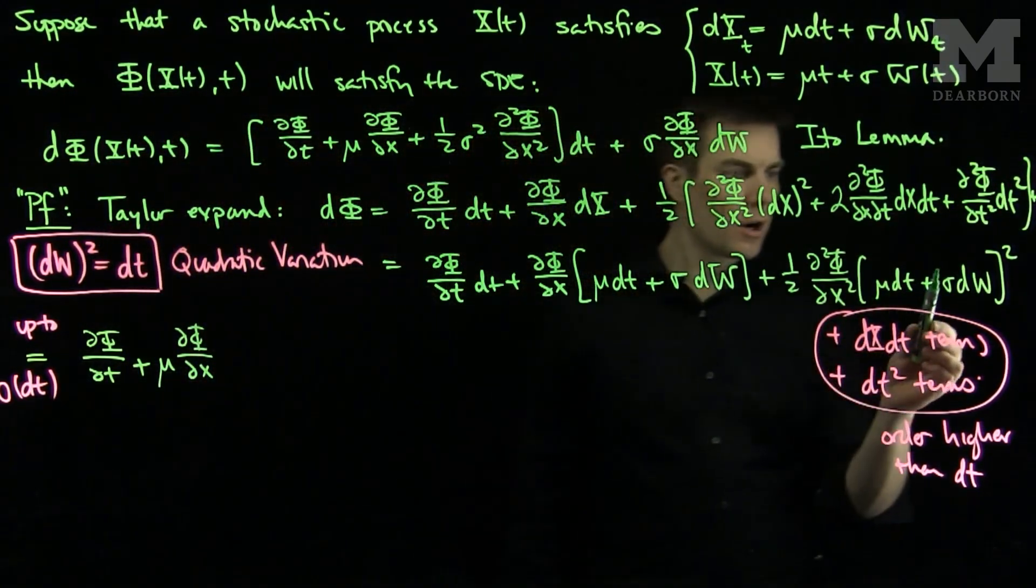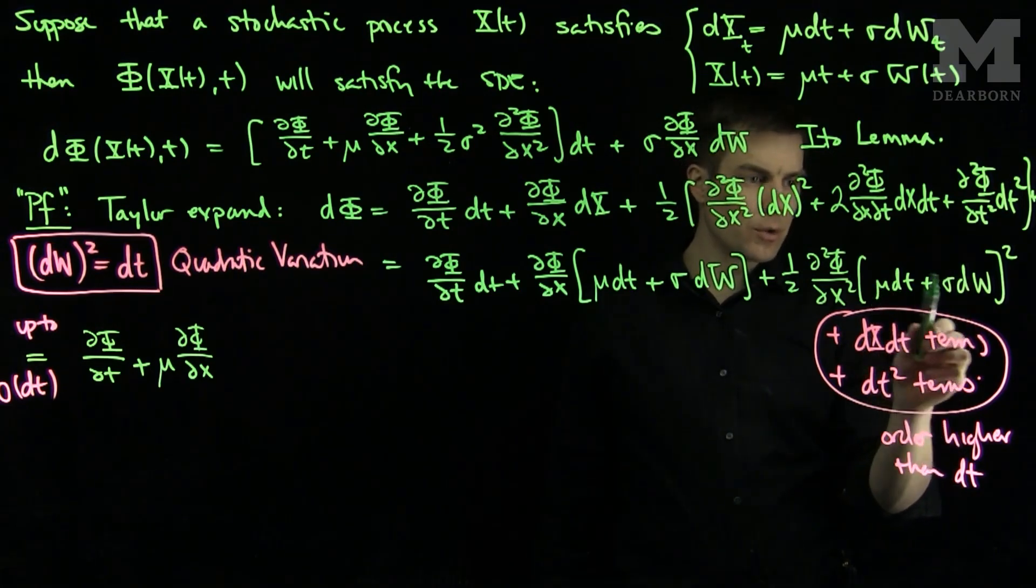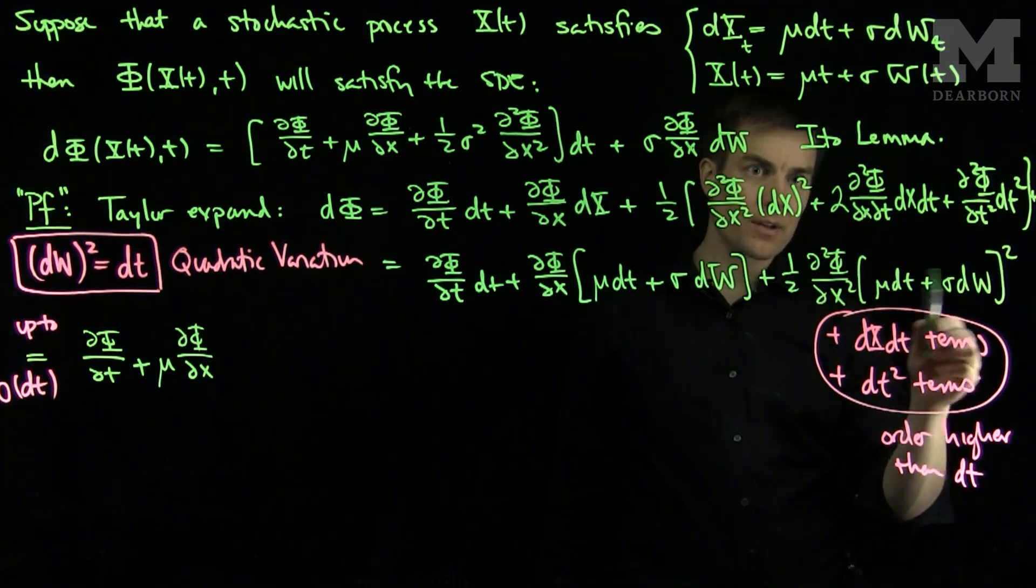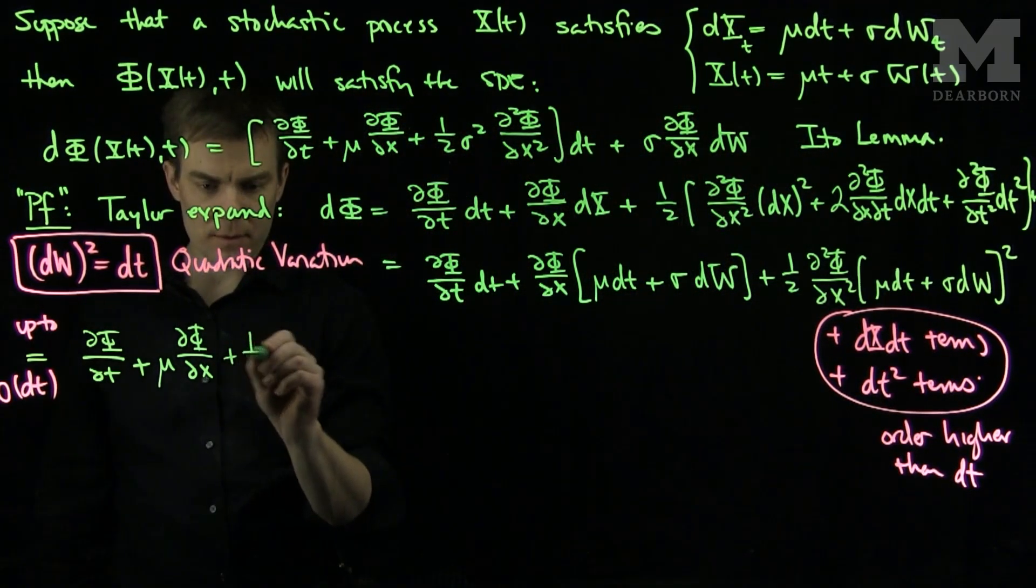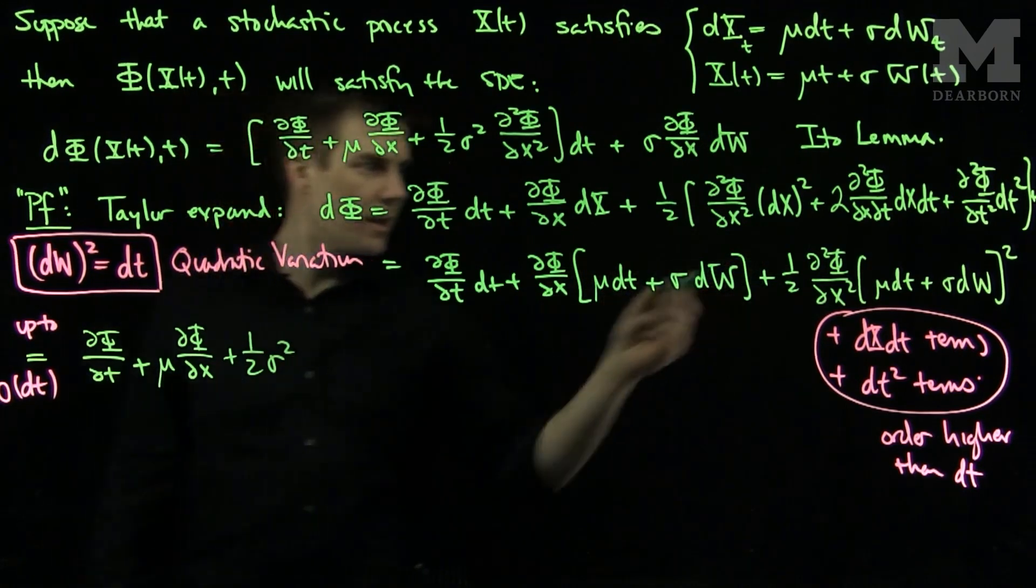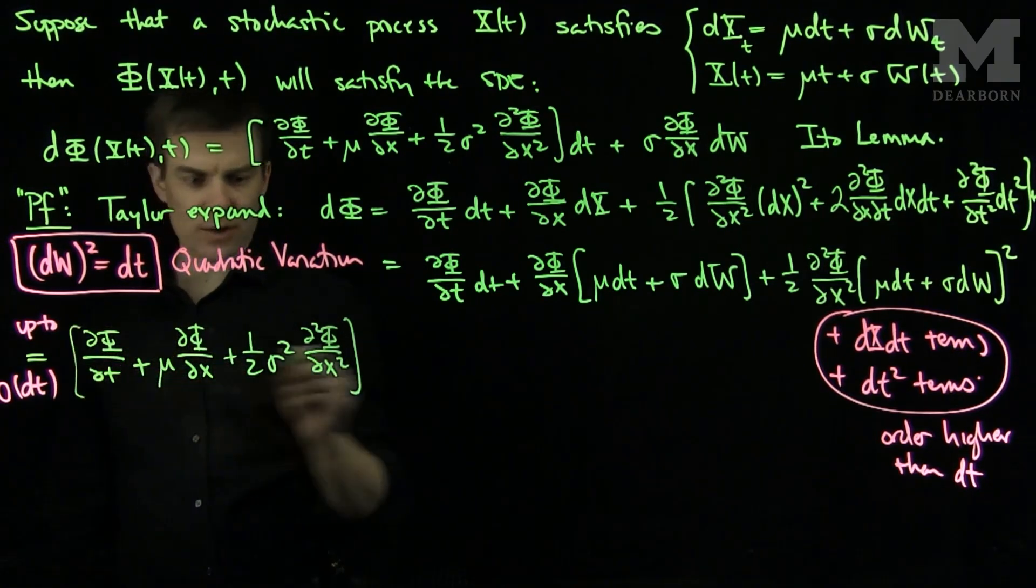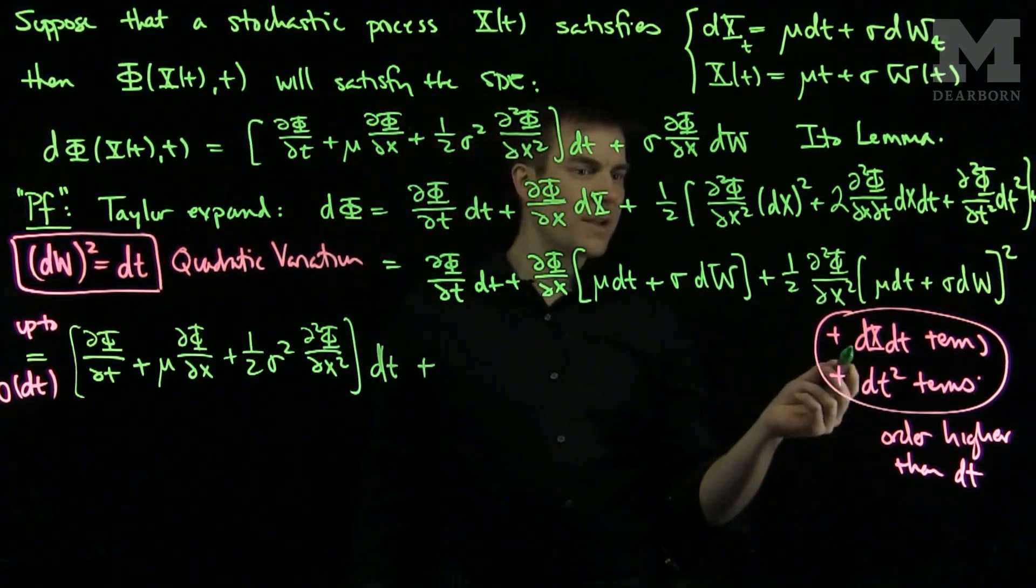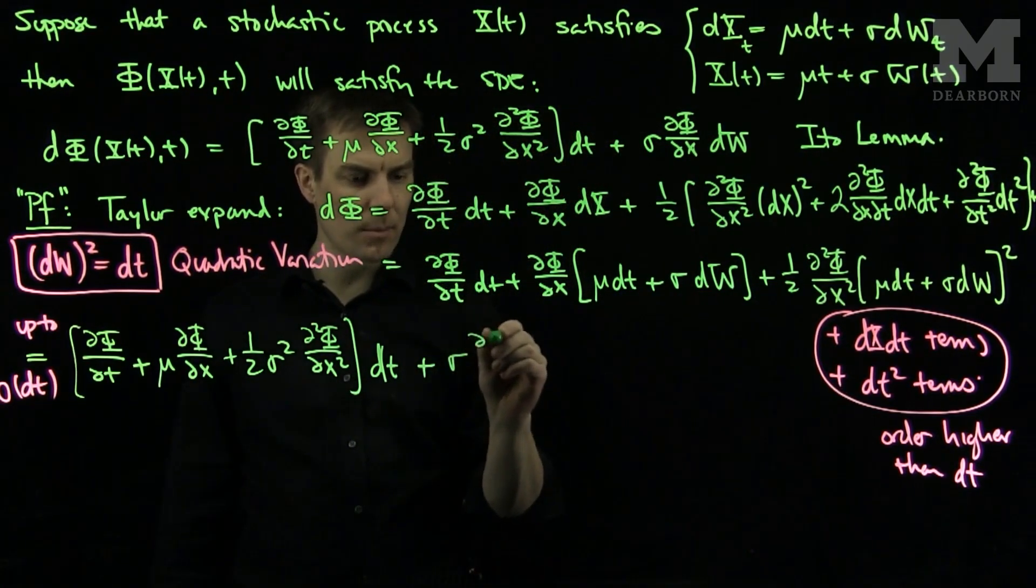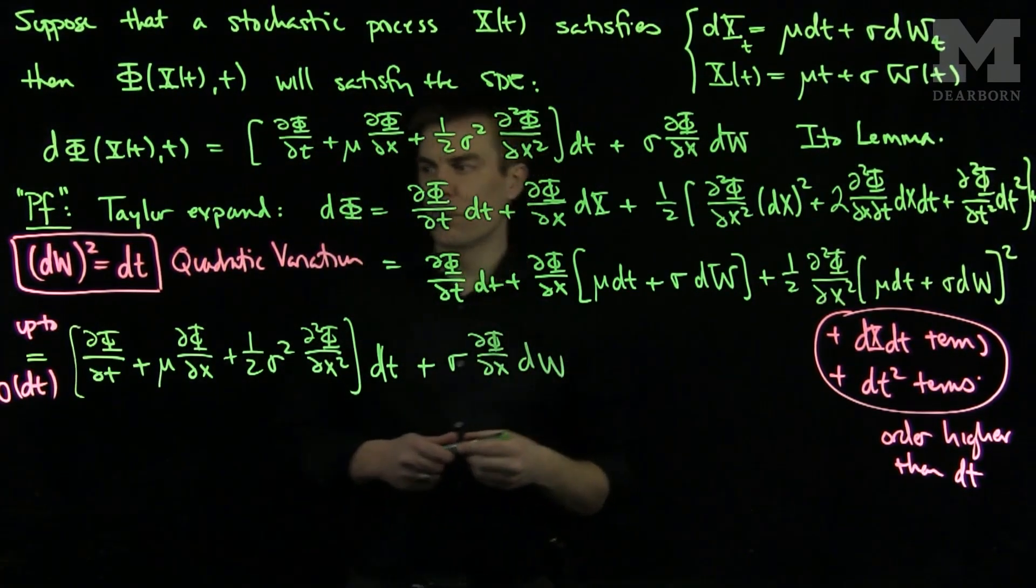Then, over here, we will have a μ²dt² which we'll disregard. We'll have a 2μσ dt dw that will be higher than dt, so we'll disregard it. And I'll have a σ²dw² and since dw² = dt, I'll get a (1/2)σ² and then I'll have a ∂²φ/∂x² term, and those are all my dt terms. Plus, the only term that remains that has a single Brownian motion is σ∂φ/∂x dw, and this provides us with the proof of the Itô Lemma.